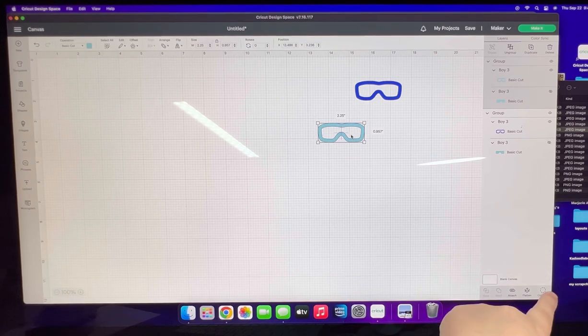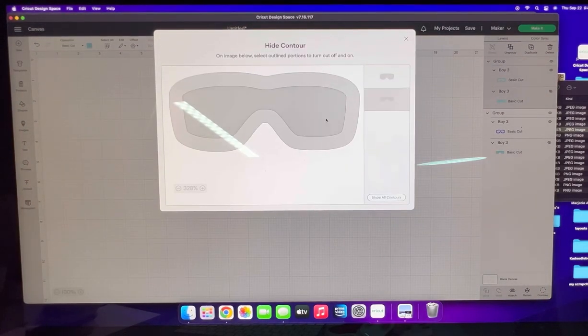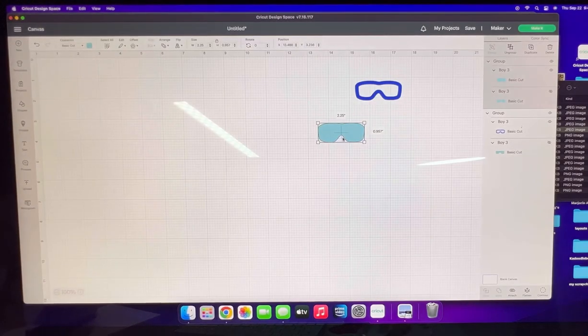Down on the bottom here, I click contour and I hide this light blue piece that we hid. The reason I hide this is so we have a solid piece.